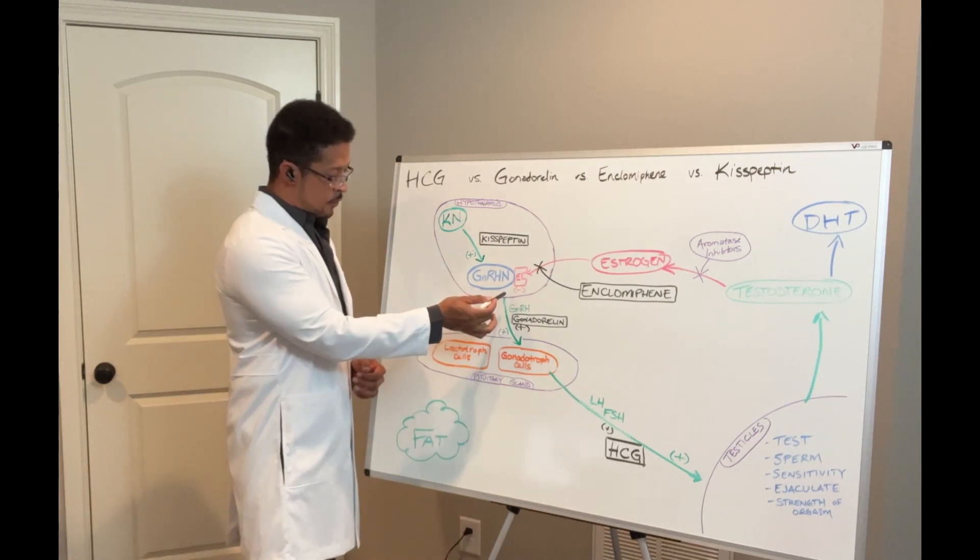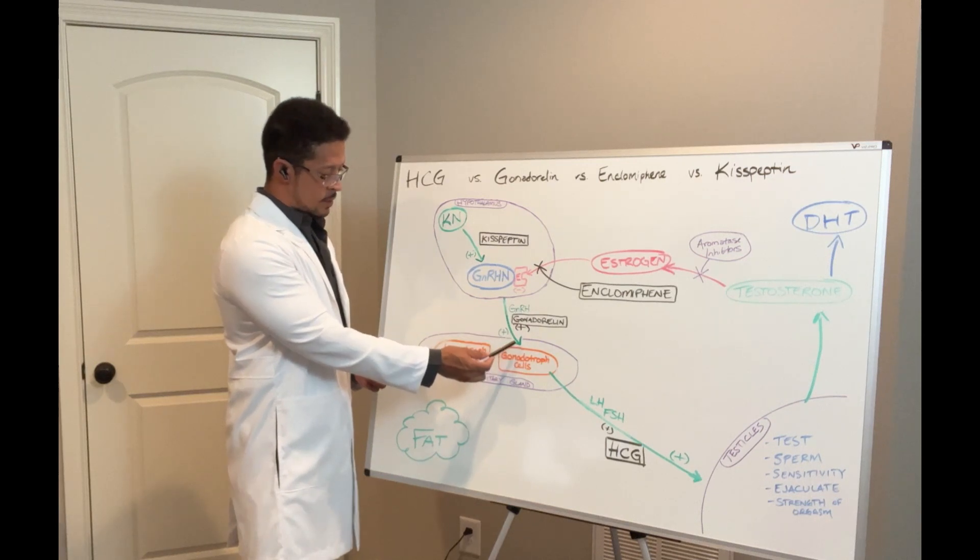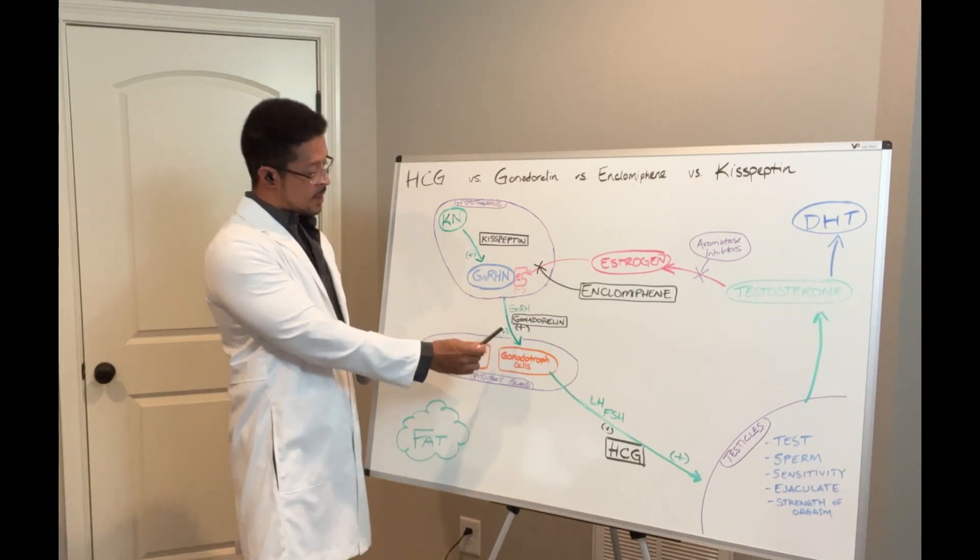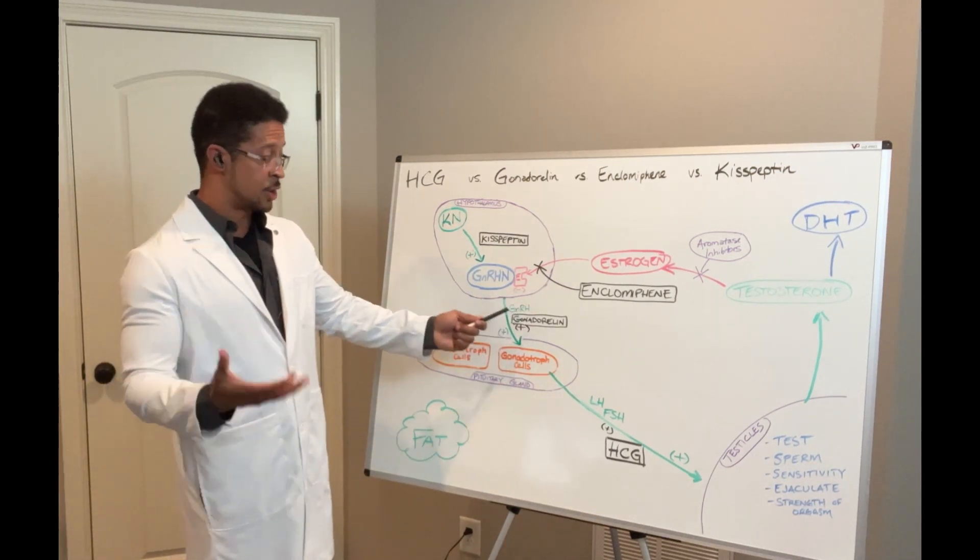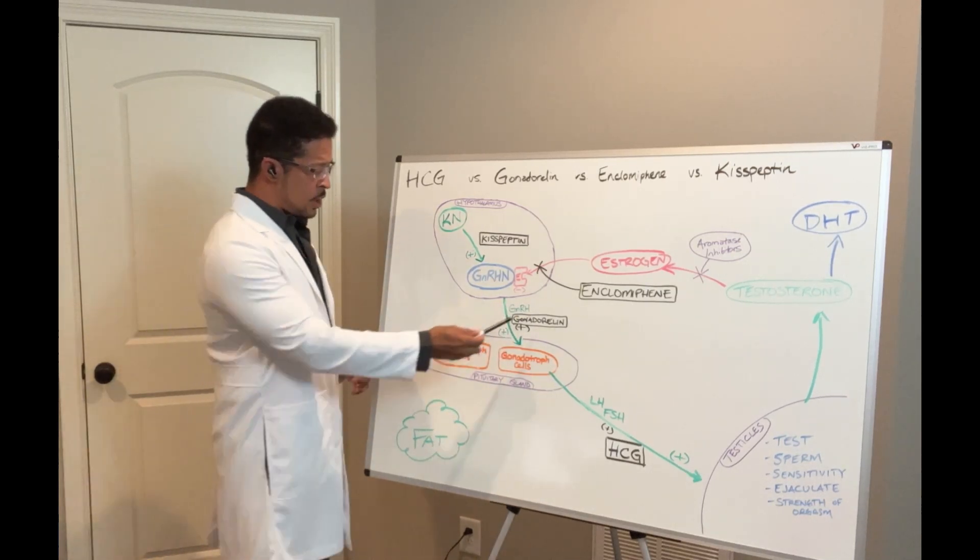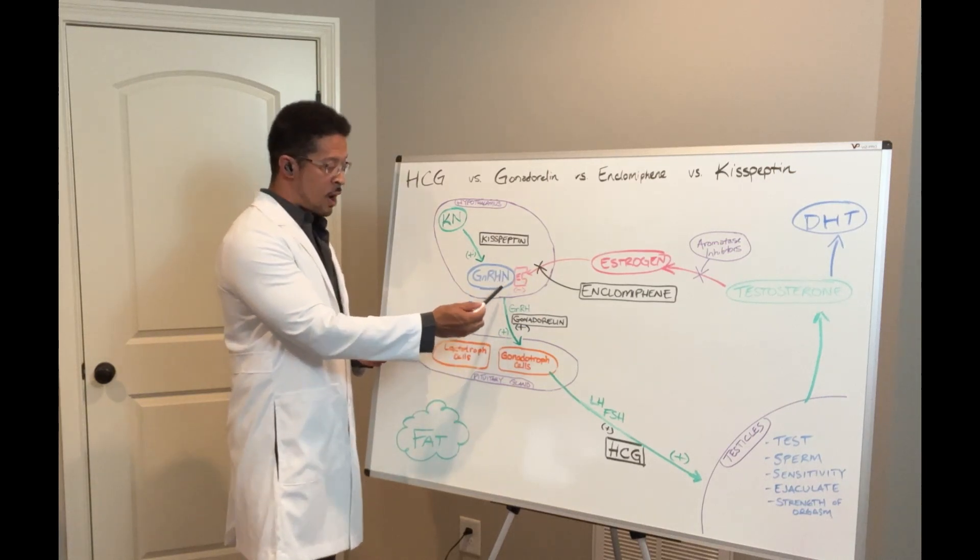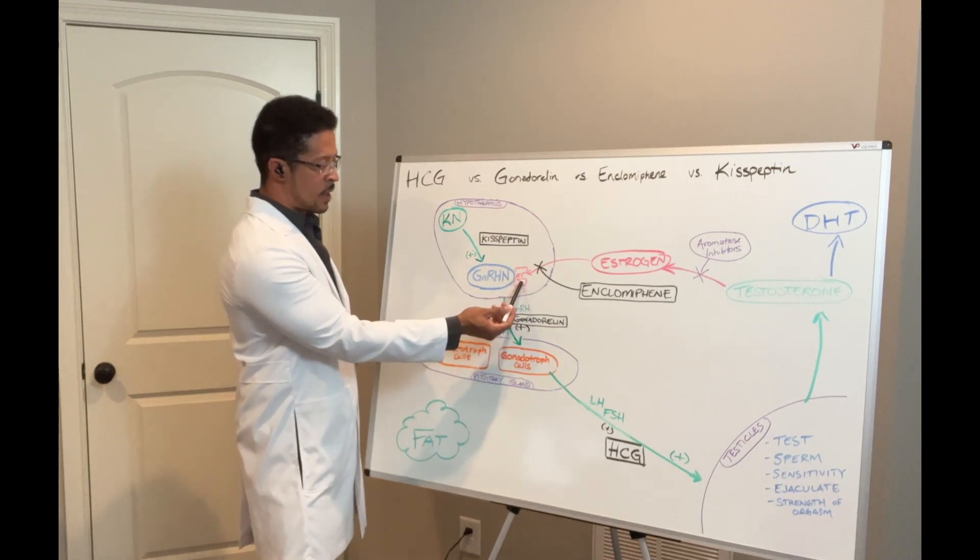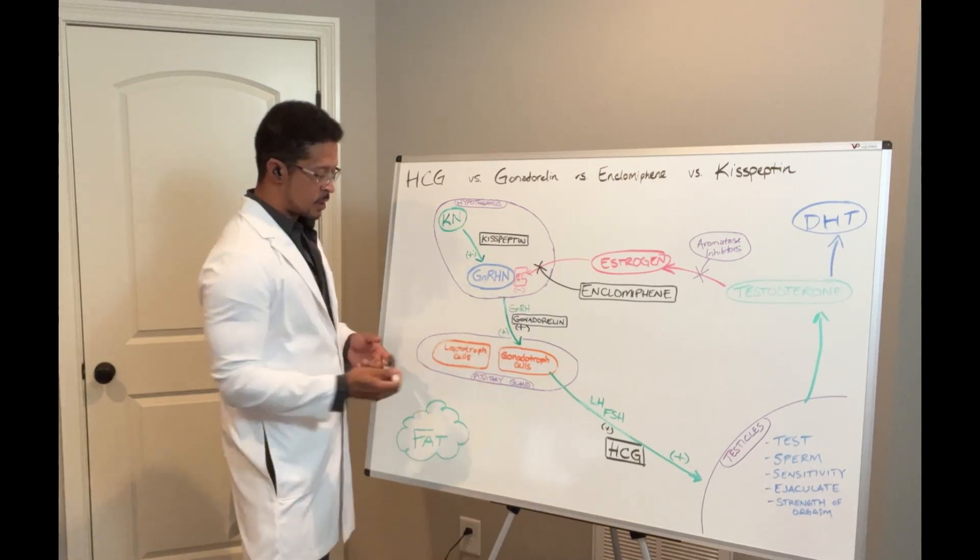This is now the first signal that's actually going to leave the hypothalamus. We're still deep in the brain and it doesn't have very far to go. It's just going to go into the pituitary gland to kick off the next segment. As it's traveling from hypothalamus to pituitary gland, that's what this green line signals. Now, if this is the problem that you have in your cascade, then Gonadorellin replaces what that gonadotropin-releasing hormone neuron is supposed to be doing.